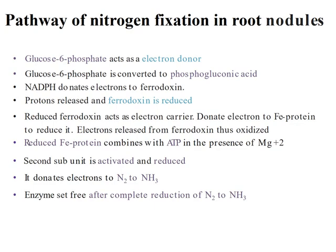In the pathways of nitrogen fixation in root nodules: glucose-6-phosphate acts as an electron donor and is converted to phosphogluconic acid. NADPH donates electrons to ferredoxin, which is reduced. Reduced ferredoxin acts as an electron carrier and donates electrons to activate the second subunit of nitrogenase. Reduced ferredoxin combines with ATP in the presence of magnesium ions. The second subunit is activated and reduced, donating electrons to nitrogen to convert it to ammonia. The enzyme is set free after complete reduction of nitrogen to ammonium.